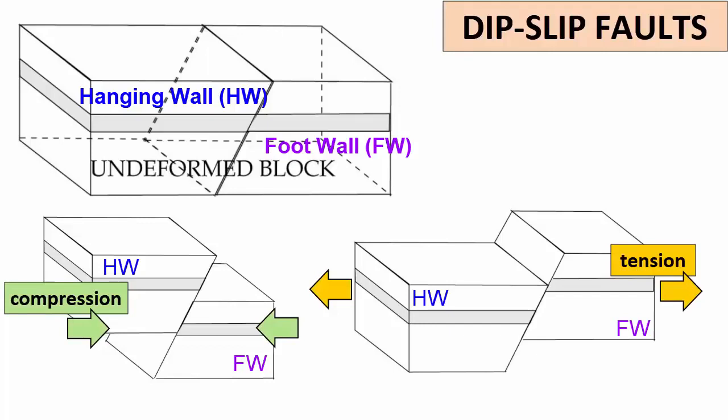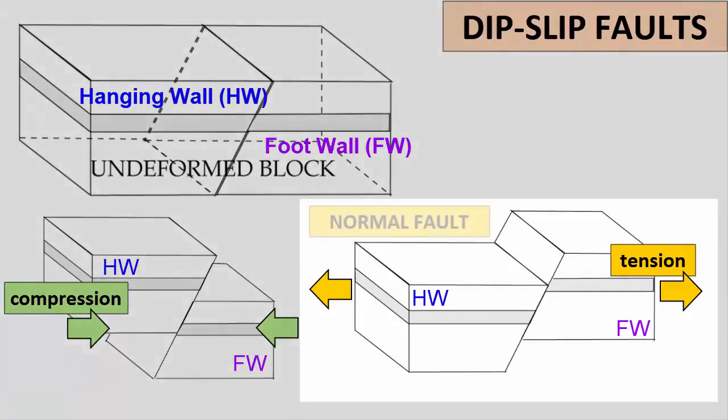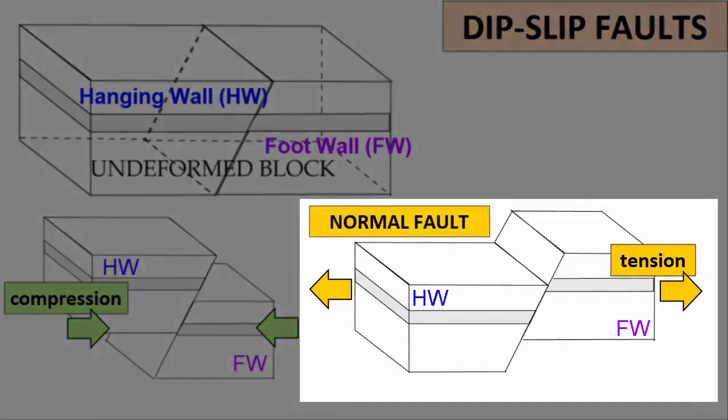Faults are further classified by the stresses applied and the motion of rocks on one side of the fault relative to the other. Normal faults are dip-slip faults caused by tension. As tension stress pulls the rocks apart, gravity pulls down the hanging block. Normal faulting gets its name because it is a normal response to gravity. If the hanging wall has moved downward in relation to the foot wall, then the fault is a normal fault.